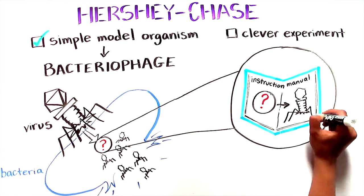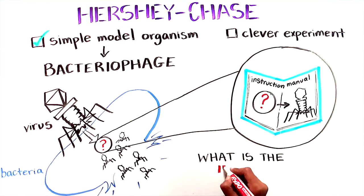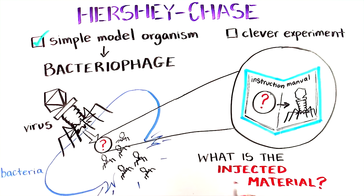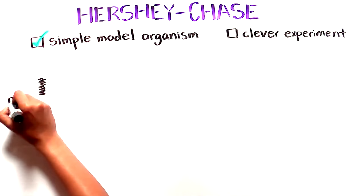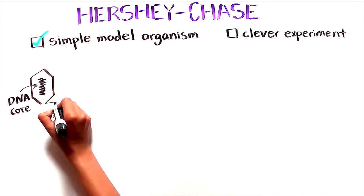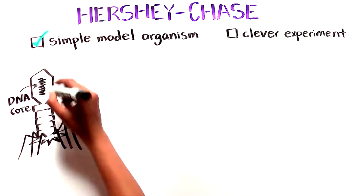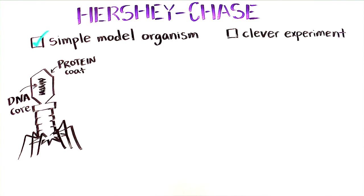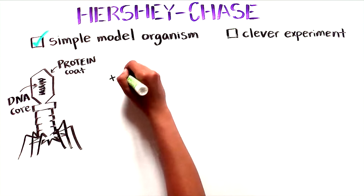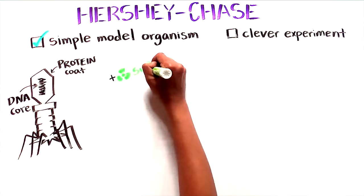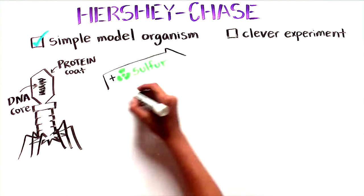But what was this material that the virus injected into its host? The answer to their question might shed light on the nature of heredity for all life on Earth. Viruses consist of two things, a DNA core surrounded by a protein coat. Hershey and Chase needed to figure out which of the two was injected into the bacteria. They ran two experiments and in each they labeled one of the components.